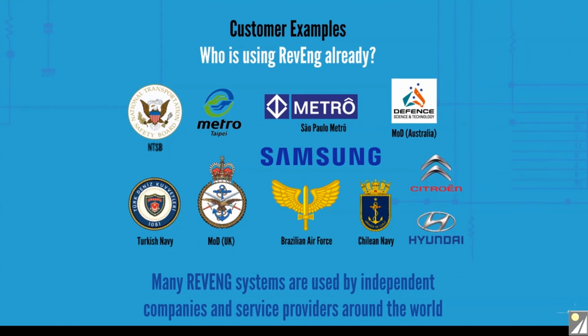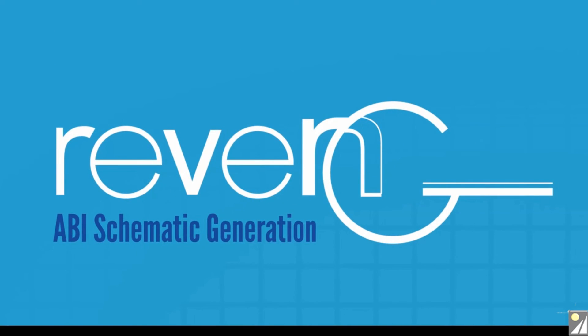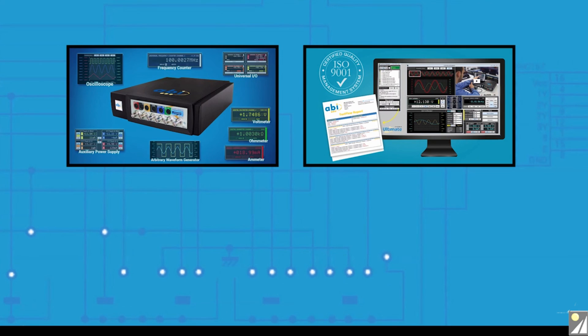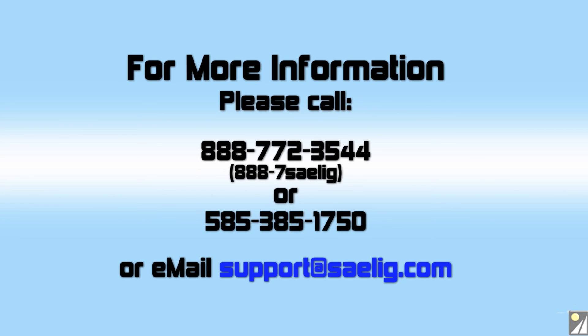Who's using Revenge already? Apart from large government and military organizations across the globe, private manufacturers and independent repair companies have all been benefiting from the schematics generated with the invaluable help of Revenge. To learn more about Revenge and other solutions for PCB testing and troubleshooting manufactured by ABI Electronics, please contact support at salig.com.